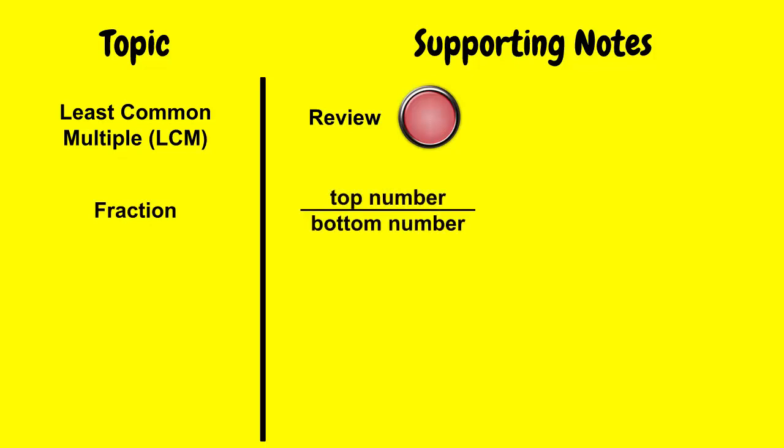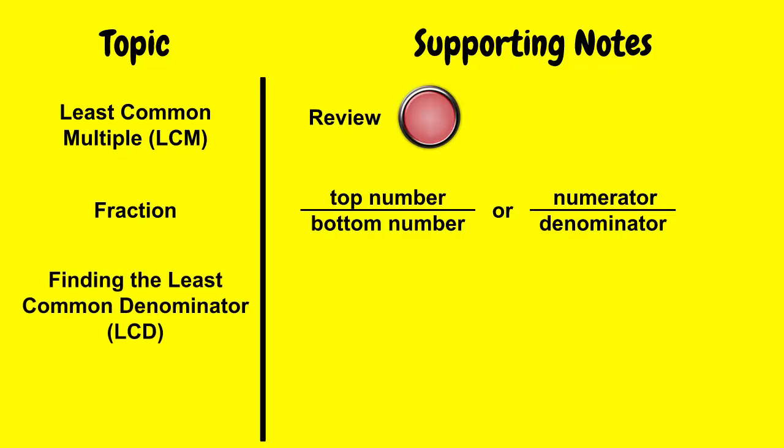Fractions consist of two parts, the top number and the bottom number. Or in mathematics we call this numerator and denominator. Finding the least common denominator, you have to find the LCM of the denominators.